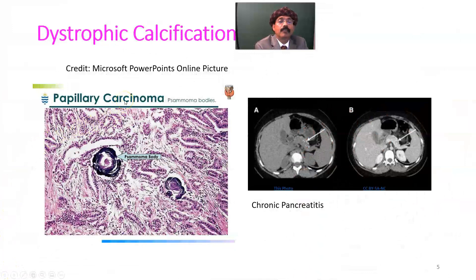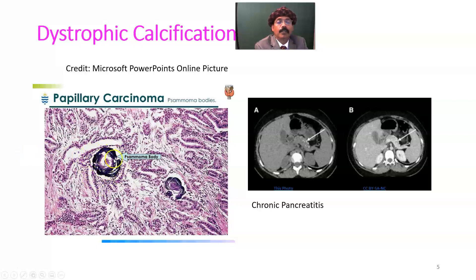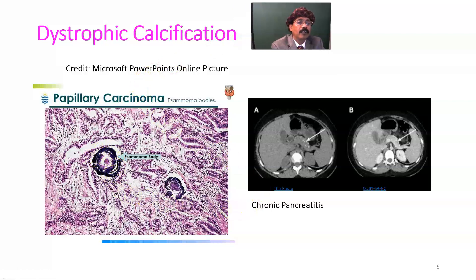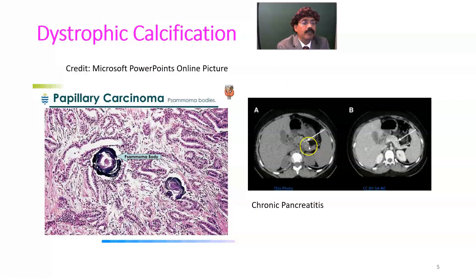Here is papillary carcinoma of the thyroid gland. This is the thyroid gland. Here is the psammoma body — this is the focus of dead tissue. Surrounding it we have lamellae of calcification and other cells, and calcium deposition forms the psammoma body in concentric layers. Another example of dystrophic calcification is calcification due to chronic pancreatitis — pancreatic tissue is damaged and calcium is deposited there.